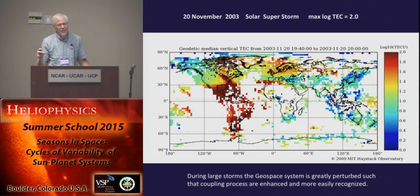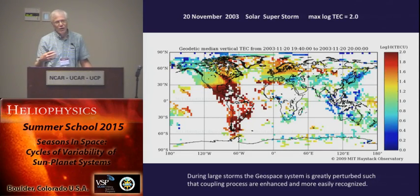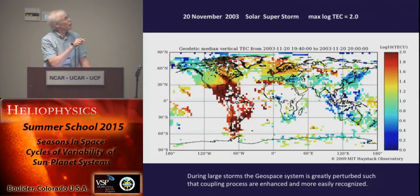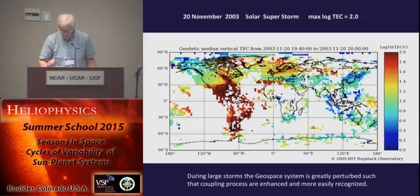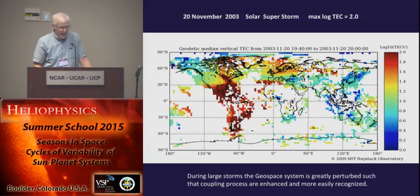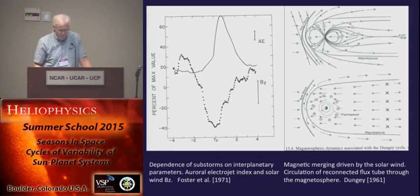It is the signature of the redistribution of plasmaspheric and ionospheric material from low and middle latitudes to the very highest latitudes and throughout the magnetosphere. Disturbed conditions and some of these techniques let you actually visualize some of the flow paths that you're looking at.